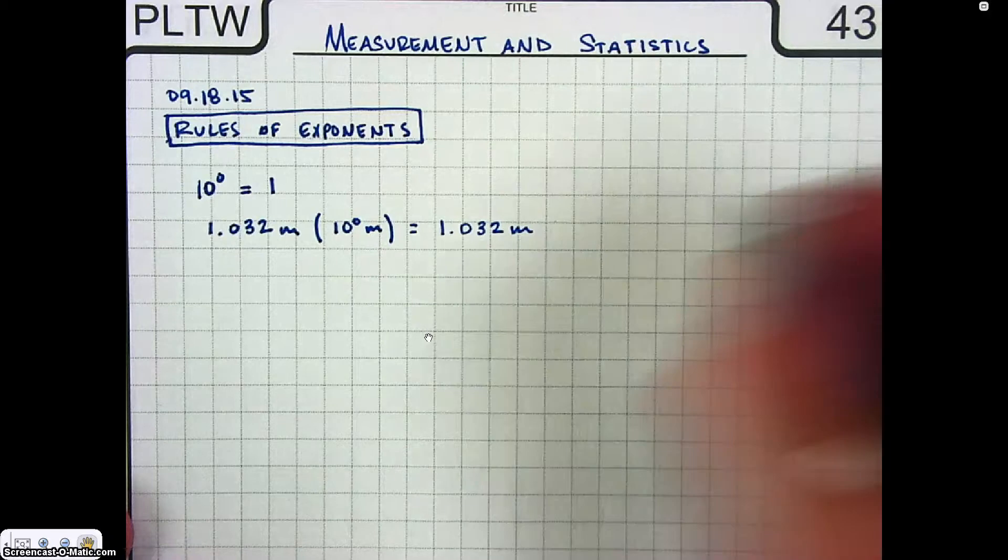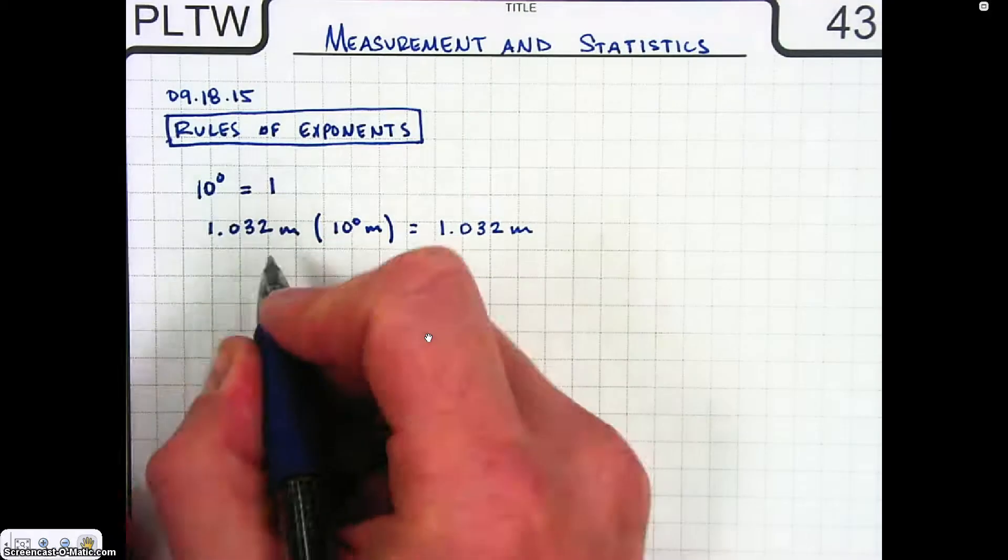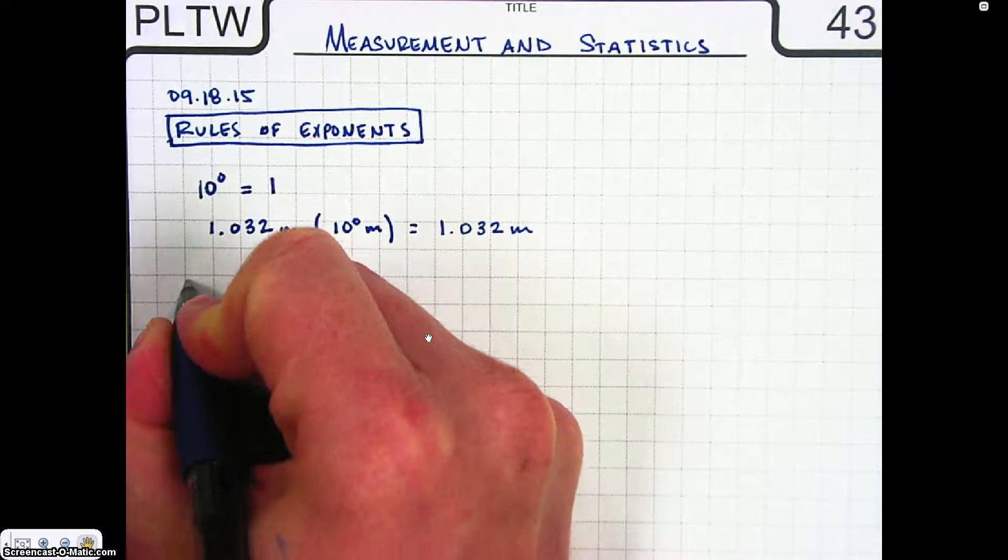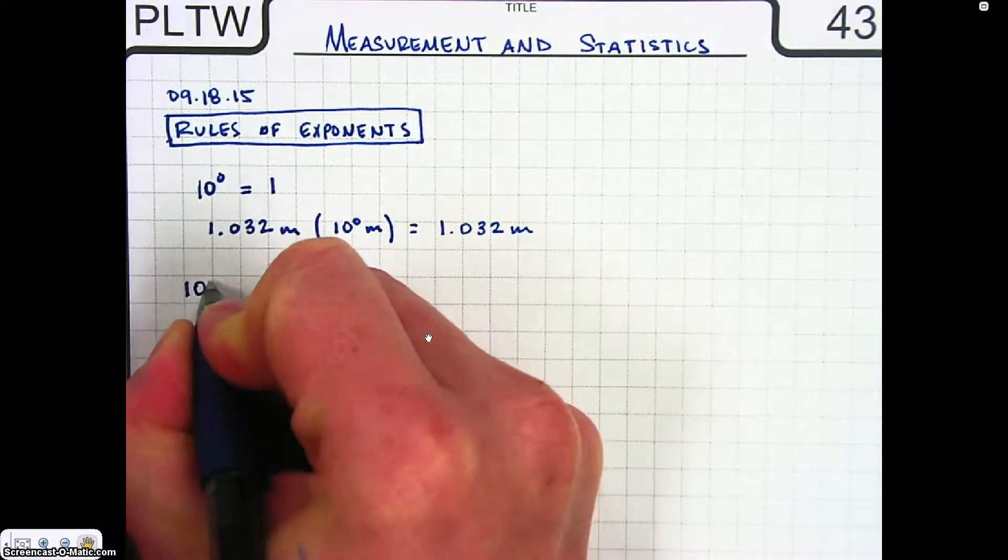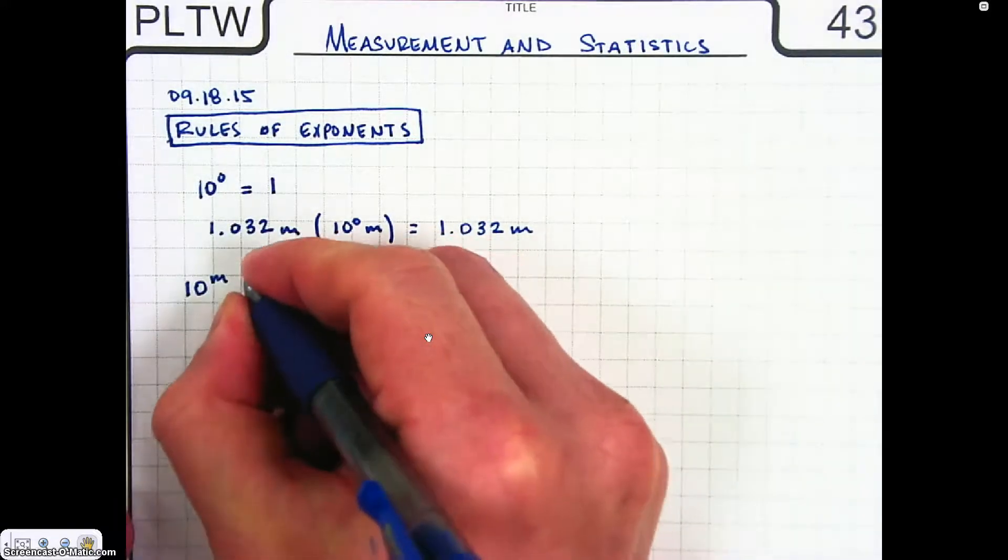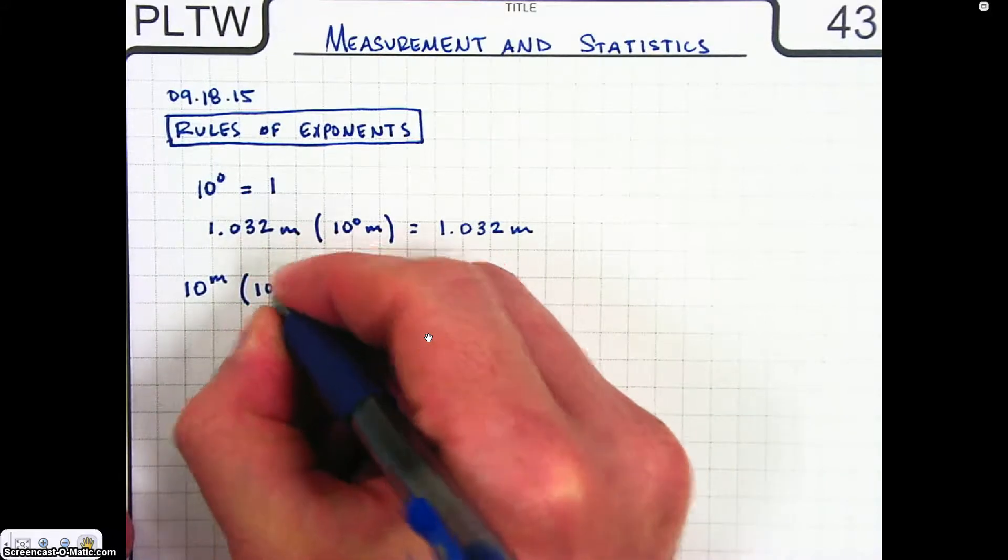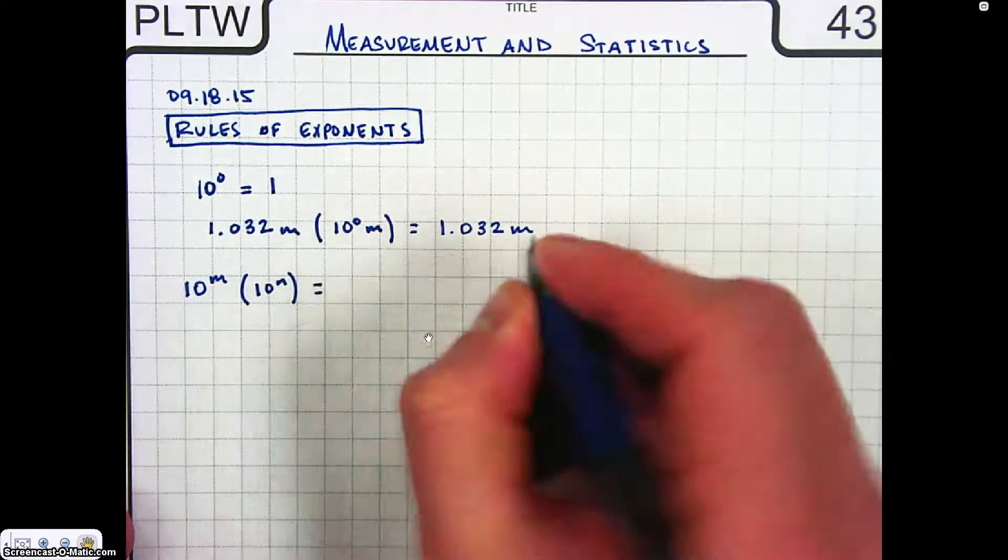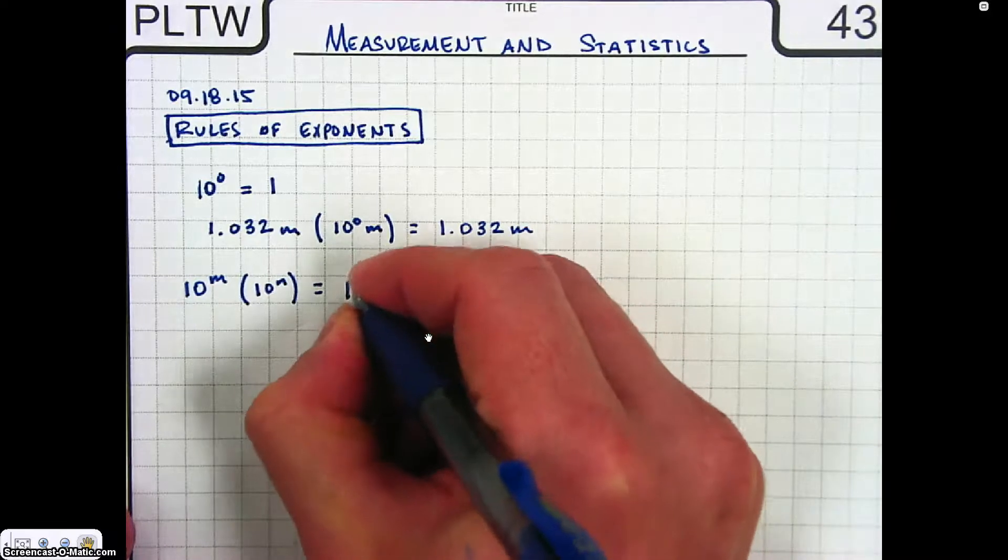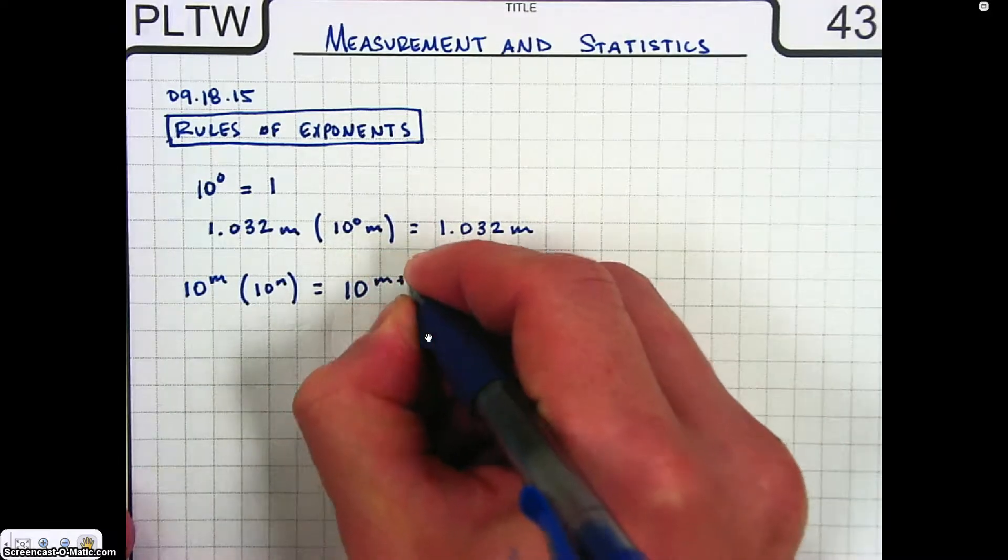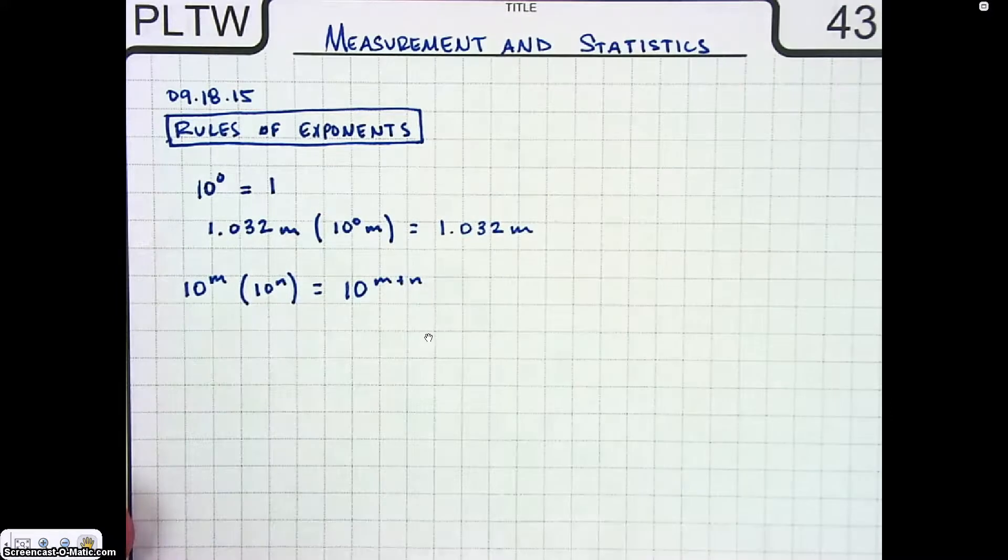Now, if we have different exponents, we'll use a variable this time. 10 to the m times 10 to the n, that's equal to 10 to the m plus n. And so that's an additive property.